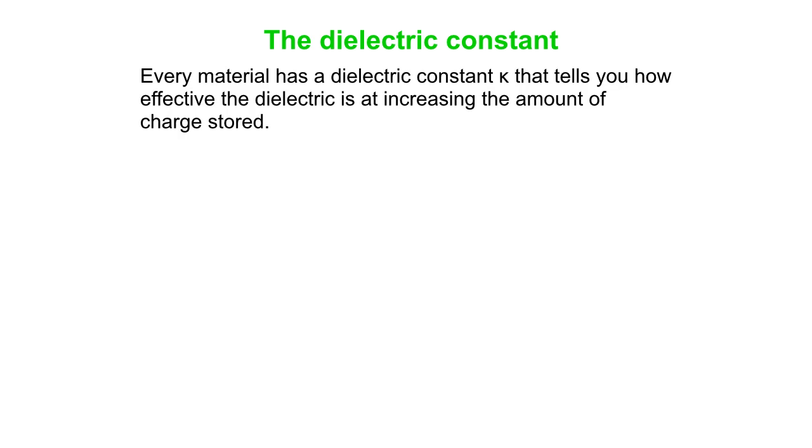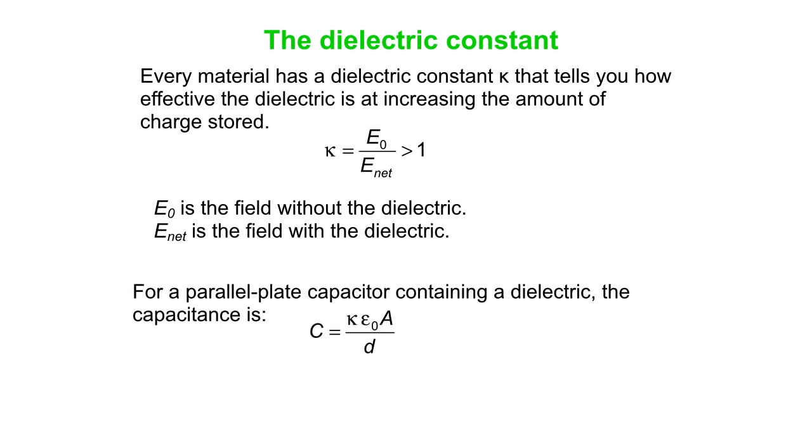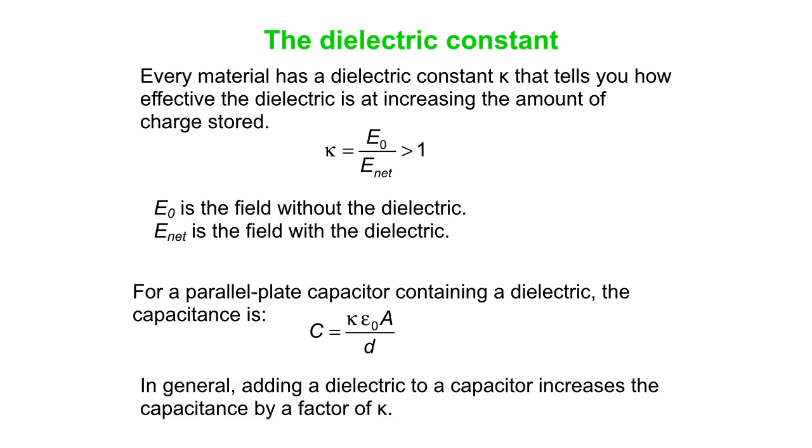So every material has what's called a dielectric constant. It tells you how effective it is at increasing the amount of charge stored. And the dielectric constant is a unitless parameter. It's the original field without the dielectric divided by the field you get in the dielectric when you put the dielectric in the capacitor. E naught is the field without the dielectric, E mat is the field with the dielectric. And then we modify our parallel plate capacitor equation by adding this constant. It looks like a K, but it's actually the Greek letter kappa. So our full equation is C is capacitance is kappa epsilon naught A over d. And what we're really saying is, adding a dielectric increases the capacitance by a factor of kappa.